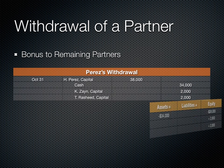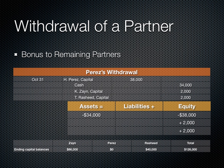Let's assume that Zane and Rashid don't want Perez to leave because they think losing him will cost the business more than simply his capital contribution. So in order to convince the other partners to let him go, Perez agrees to grant a $2,000 bonus to each of the remaining partners. In the journal entry, we debit Perez's capital, credit cash for $34,000, and credit the capital of both Zane and Rashid.